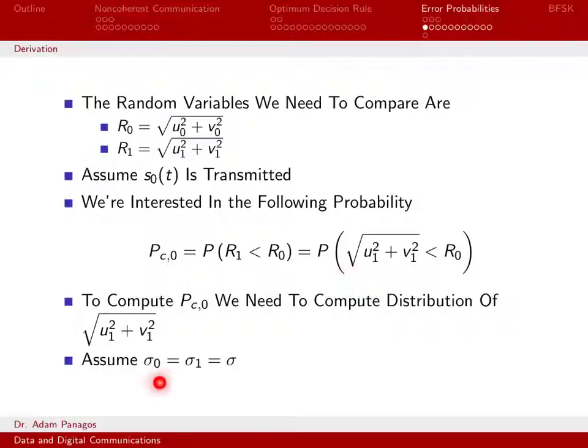Throughout this analysis, we're assuming that σ0 and σ1 are equal to σ, the same variance. This is a very common assumption that any mismatch in the receiver isn't significant enough to change the variance of the noise component of our decision statistic.